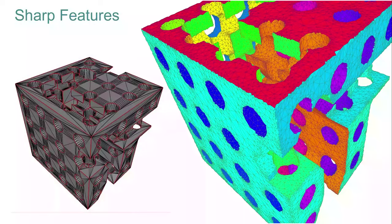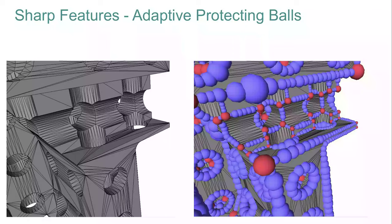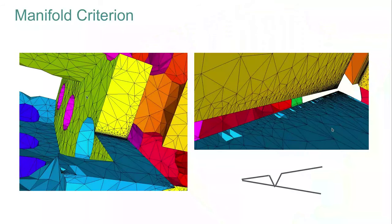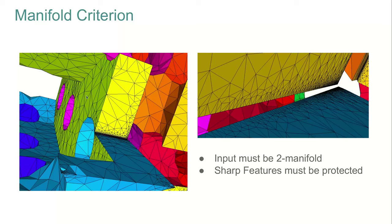If the input contains sharp features, it is important to protect them if the user wants them in the output. In this example, the input domain is shown on the left, with sharp features shown in red. If they are not protected, the output will not contain them. If the user wants them preserved, they simply provide the set of edges to protect, and an algorithm automatically computes the placement of protecting balls to guarantee those edges are preserved. If the output surface must be manifold, it is important to specify this to the meshing function — otherwise, pinched volumes can generate non-manifold edges and vertices on the bounding surface, which disappear once the manifold flag is set.